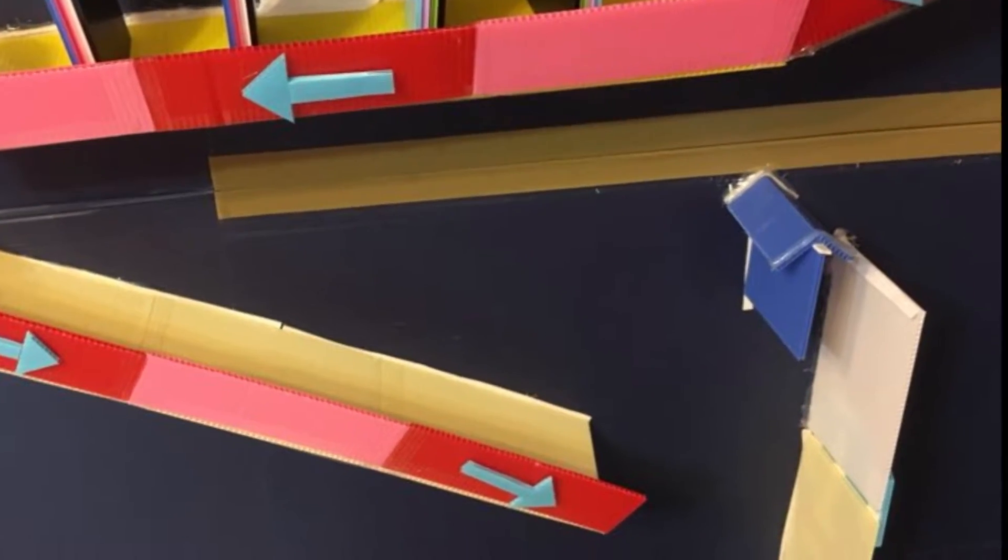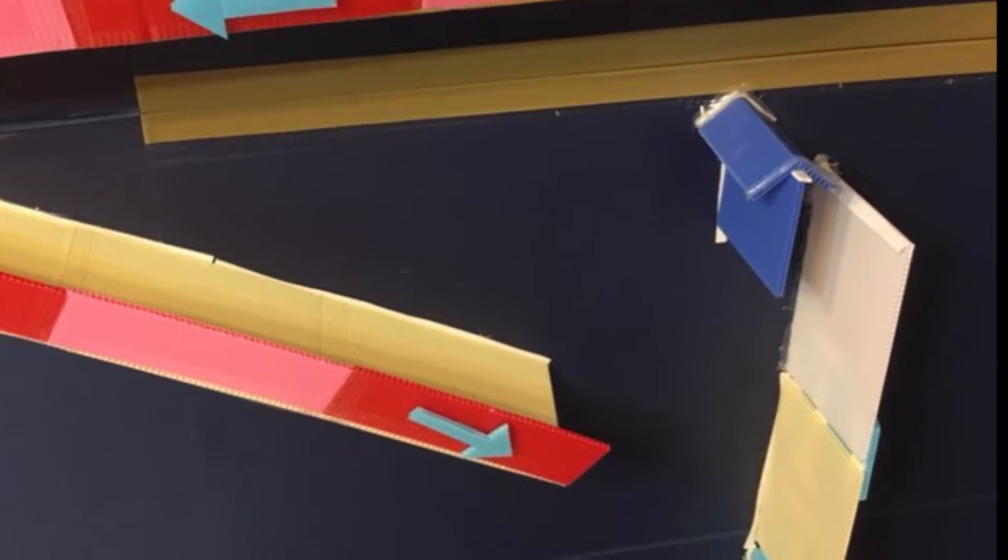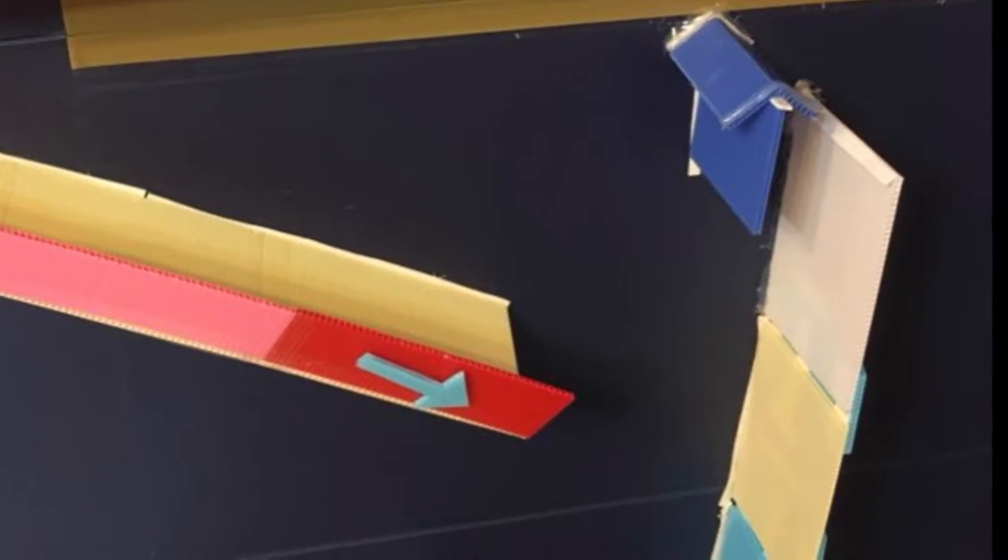After that, the tennis ball will roll down another ramp and when it rolls to the end it will fall and hit a board that changes its direction.